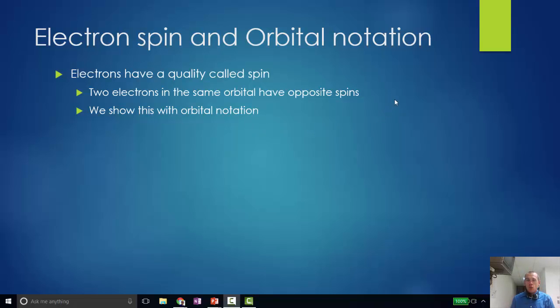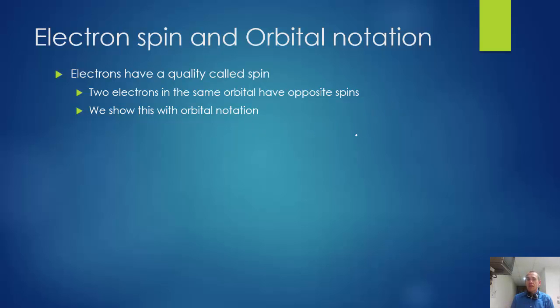In this lesson we're going to take a look at a visual way of giving electron configuration, and we do it with a thing called electron spin and we use orbital notation to do this. So electrons have a quality called spin and we represent that spin with an up arrow or a down arrow. And we use orbital notation to show how the electrons are arranged in their orbitals and what spins they have.